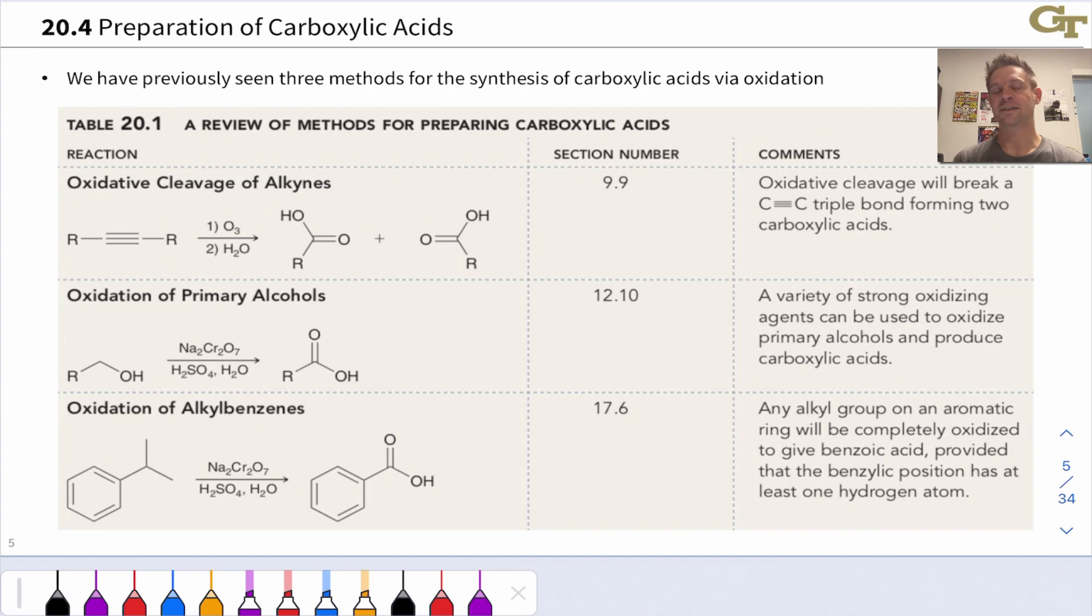Alkylbenzenes can also be oxidized to benzoic acids, and we saw these conditions in the context of multi-step synthesis of substituted aromatic compounds. For example, we can take isopropyl benzene and treat it with these strongly oxidizing conditions, Jones conditions, in fact, and we end up with the benzoic acid.